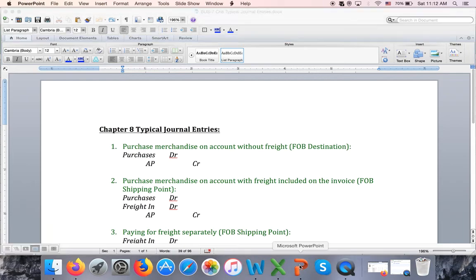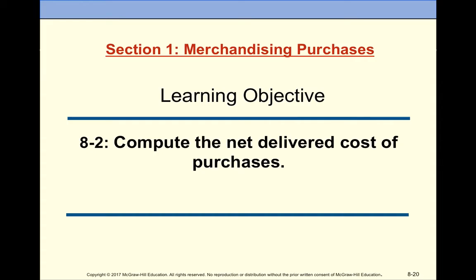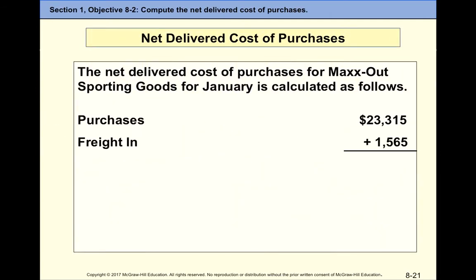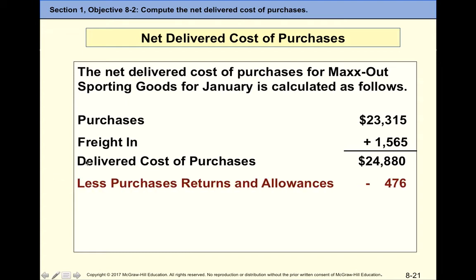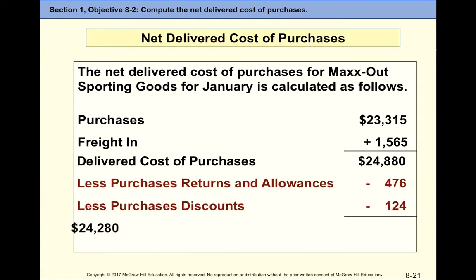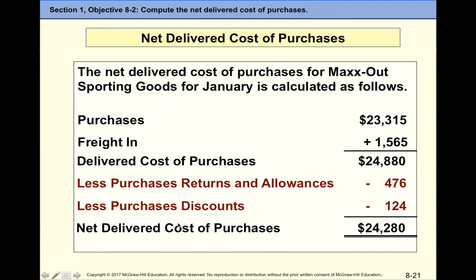The NDCP slide was covered in part one. Net Delivered Cost of Purchases is a component of the cost of goods sold section on the income statement. We take total purchases plus total freight — the subtotal is called delivered cost of purchases — then subtract the contra accounts: returns and allowances, and purchase discounts. The result is the Net Delivered Cost of Purchases (NDCP).